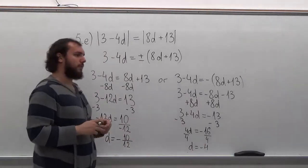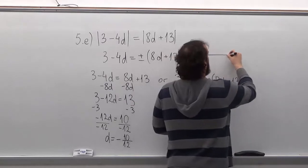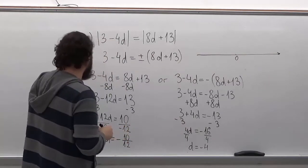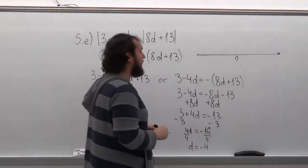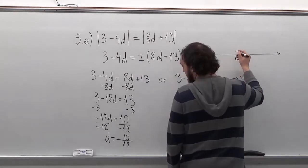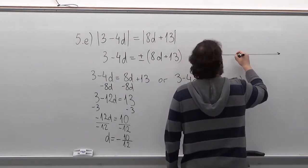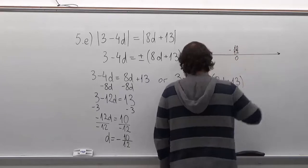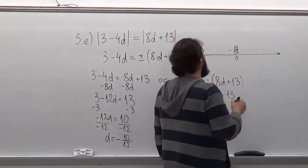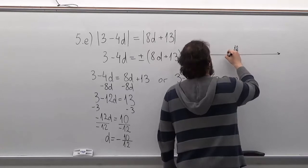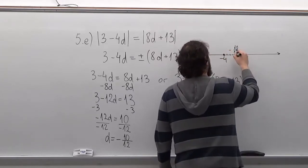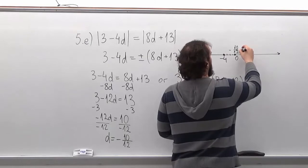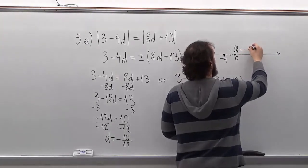Now we'll put both of those answers onto a number line. Our first answer, minus 10 over 12, is going to be between minus 1 and 0, so you can just put it right to the left of 0. And our second answer is minus 4, so we'll count to minus 4 and put a dot on every answer. Remember, you can reduce this answer further, and it will be minus 5 over 6.